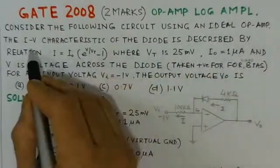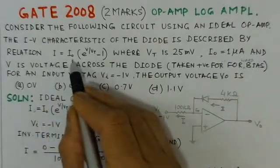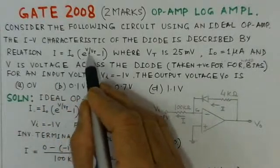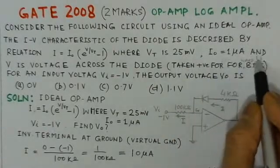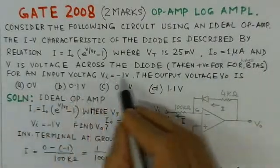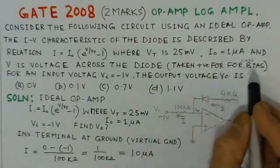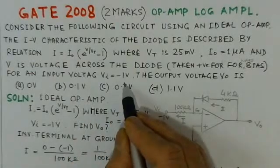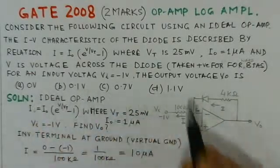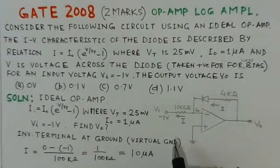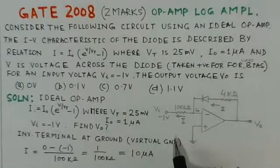The IV characteristics of the diode is described by the relation I equals I-naught times e to the power V over Vt minus 1, where Vt is 25 millivolts, I-naught is 1 micro ampere, and V is the voltage across the diode, taken positive for forward bias. For an input voltage Vi of minus 1 volt, we need to find the output voltage.